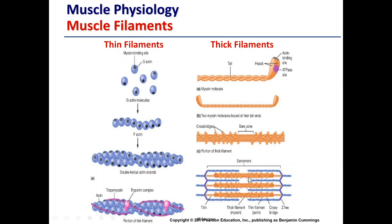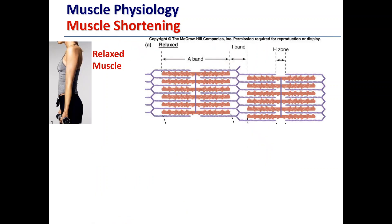The bare zone of the thick filament actually matches up with the H-zone of the sarcomere. Recall that there are no thin filaments in the H-zone — no actin. Therefore there is no requirement for myosin heads in this bare zone, because myosin is not going to bind to or interact with actin in this particular region.